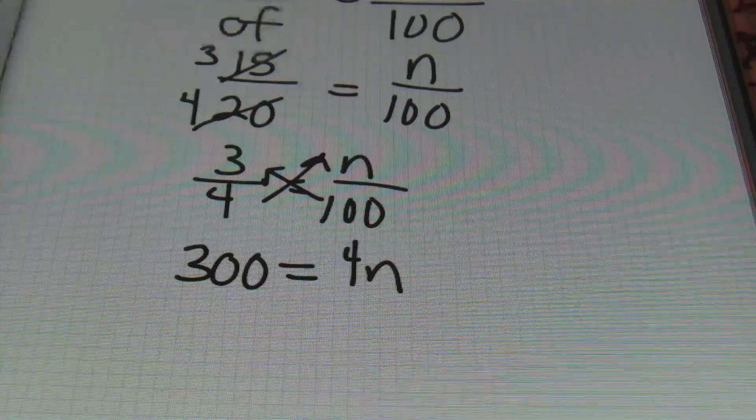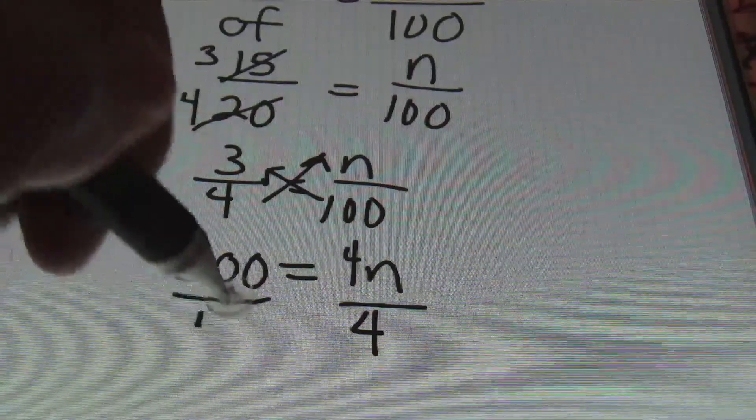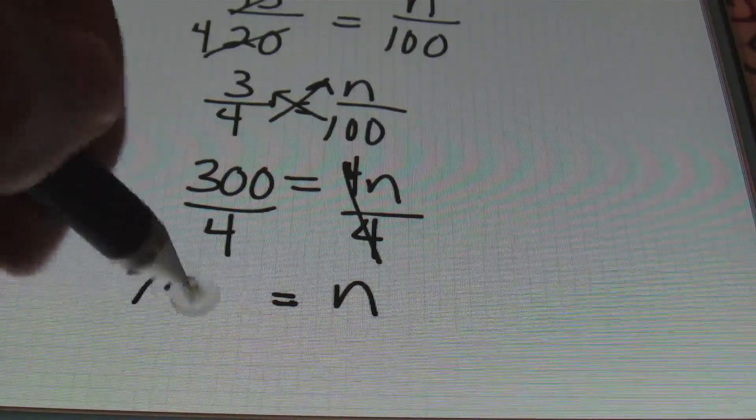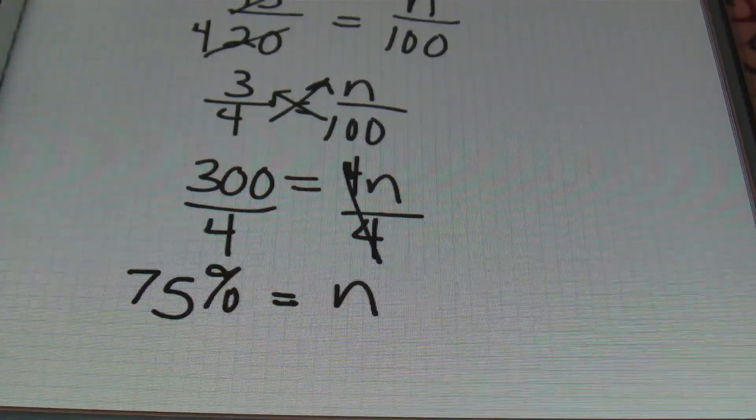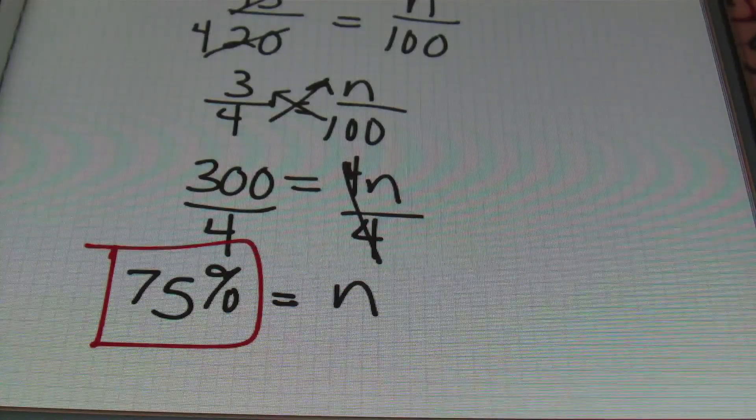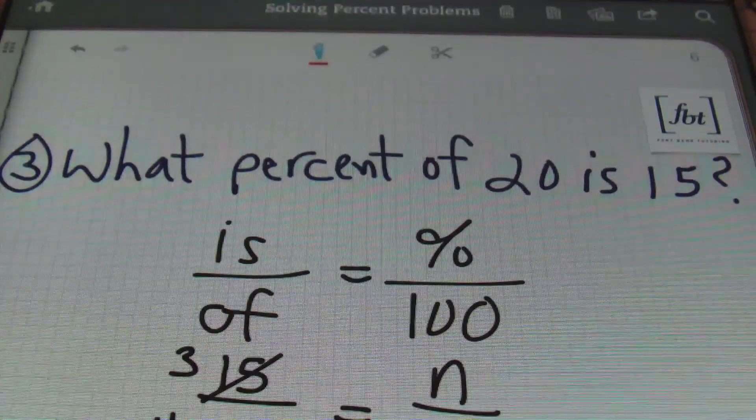Then cross-multiplying this, I have 100 times 3 is 300, and 4 times n is 4n. So I have 300 equals 4n. Next, dividing both sides by 4, that coefficient in front of the variable, we end up with n equaling 300 divided by 4. That's 75%. There you go, ladies and gentlemen. That's problem number three using the percent proportion method.